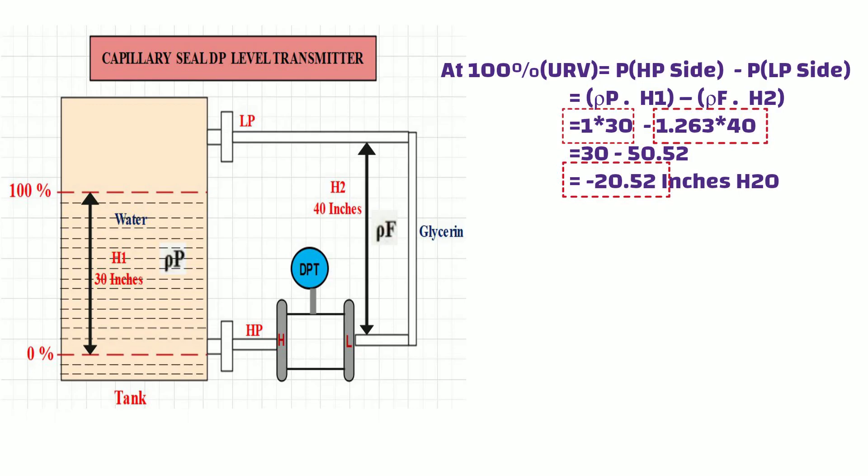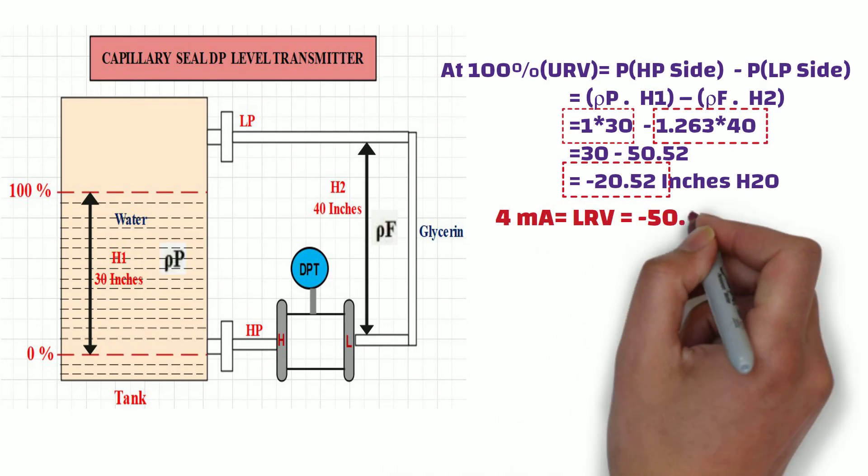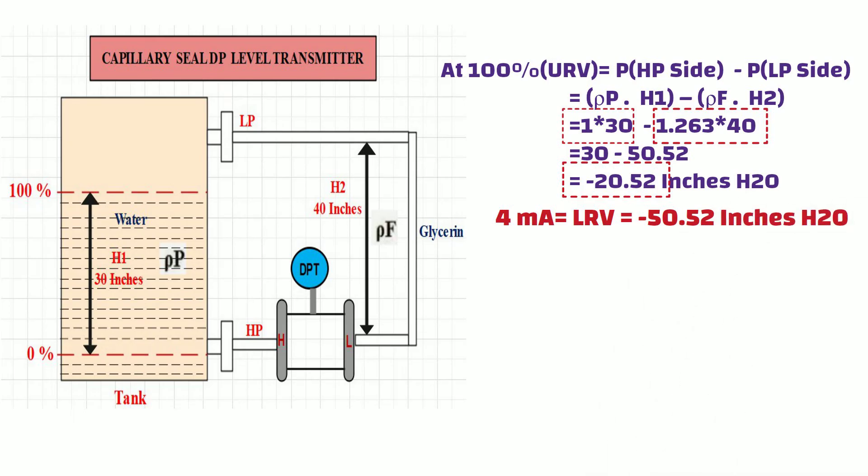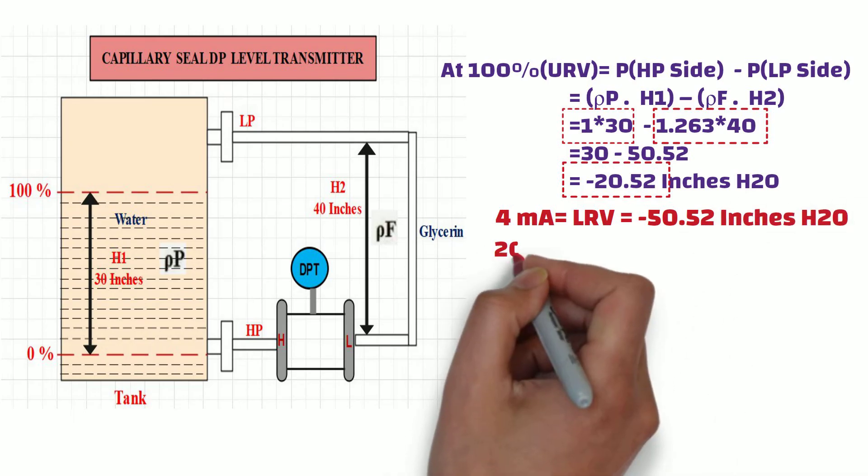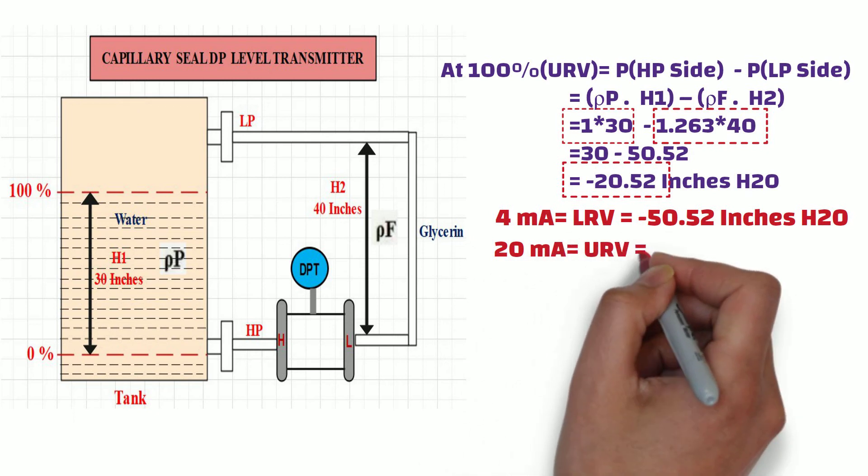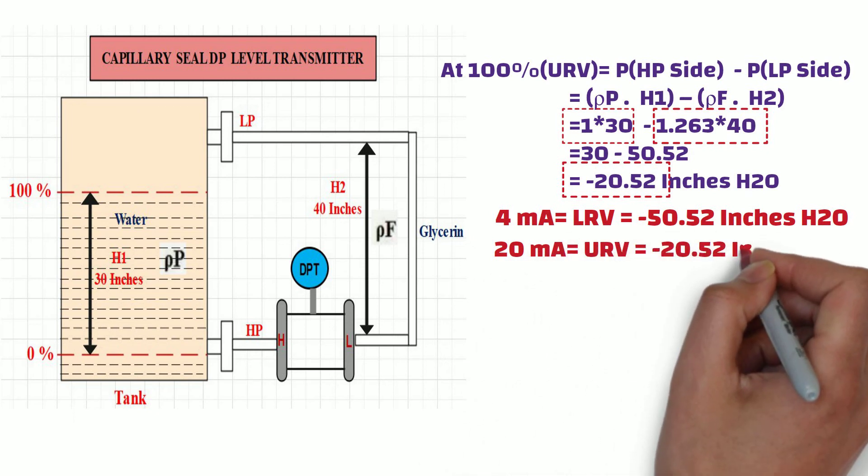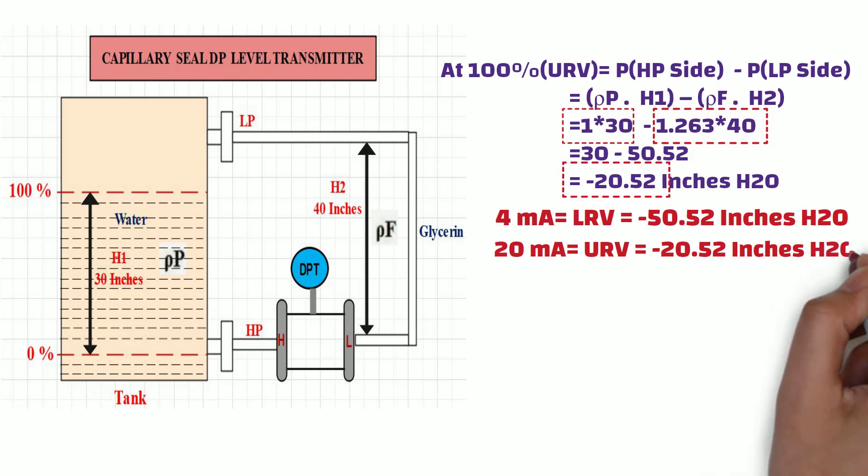So in this example, the DP transmitter gives 4 mA output when differential pressure is minus 50.52 inches H2O, and the DP transmitter gives 20 mA output when differential pressure is minus 20.52 inches H2O.